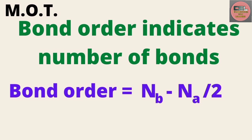Molecular orbital theory says the number of bonds is the bond order. Bond order 1 means single bond, bond order 2 means double bond, and bond order 3 means triple bond. The formula for bond order is: Bond Order = (Number of bonding electrons − Number of anti-bonding electrons) / 2.